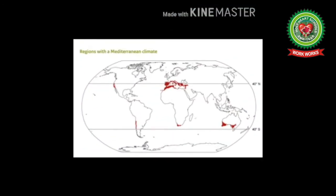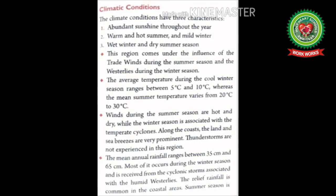This is because the general direction of the westerlies is from west to east. Maximum rainfall is received on the hilly ranges adjoining the coast, where onshore winds are forced to ascend. Coming back to the book reading, page 153 — Climatic Conditions: The climatic conditions have three characteristics: abundant sunshine throughout the year, warm and hot summer with mild winter, and wet winter with dry summer. The region comes under the trade winds during summer and the westerlies during winter. The average temperature during winter ranges between 5 and 10 degrees Celsius, while the mean summer temperature varies from 20 to 30 degrees Celsius. Winds during summer are hot and dry, while winter is associated with temperate cyclones. Along the coast, land and sea breezes are very prominent.